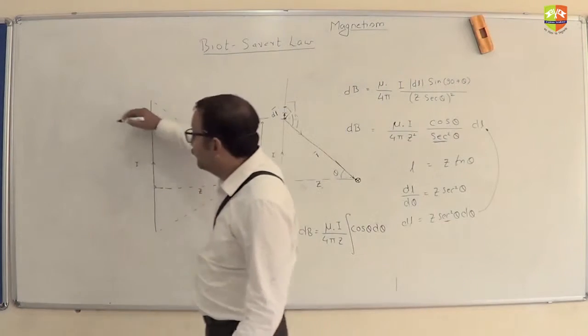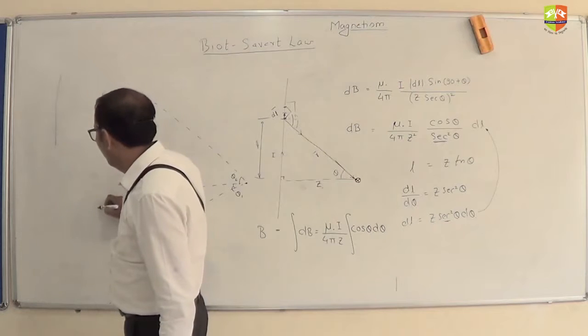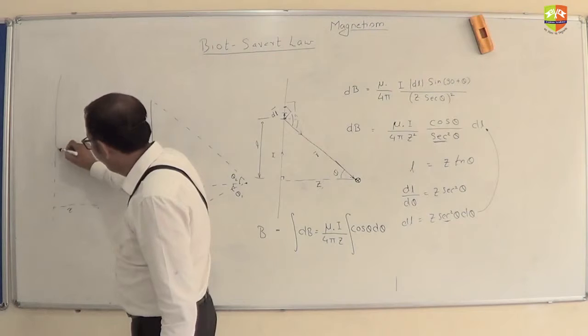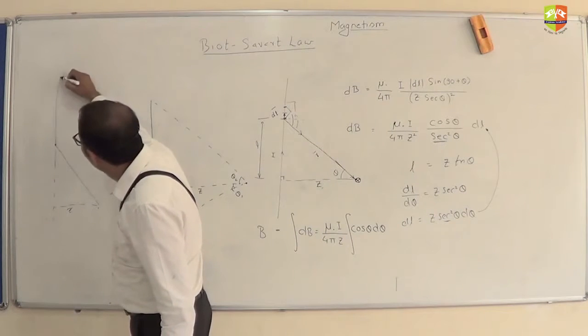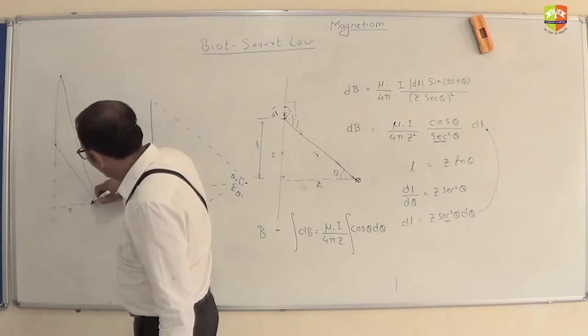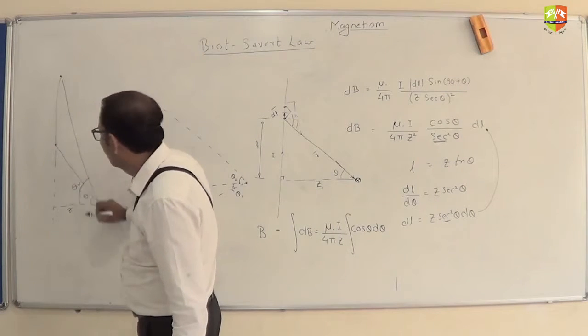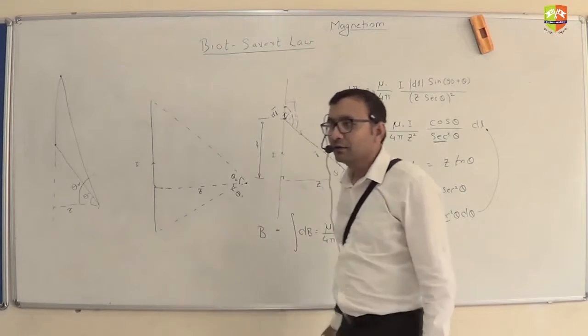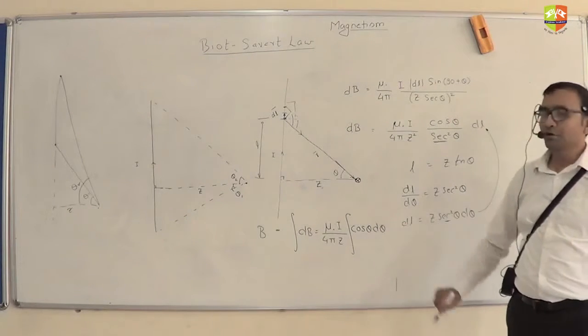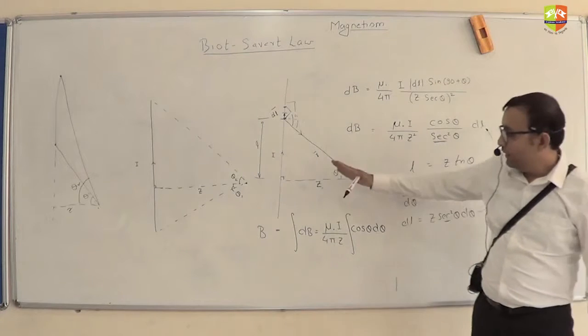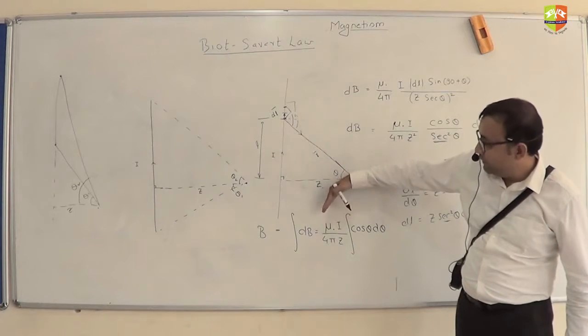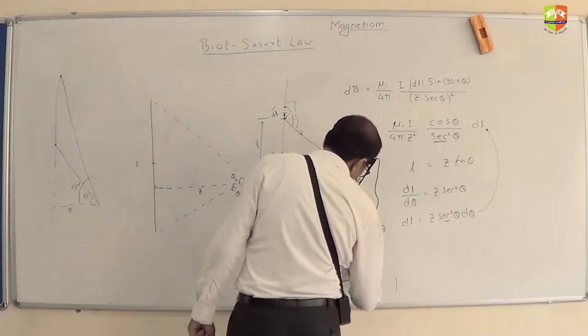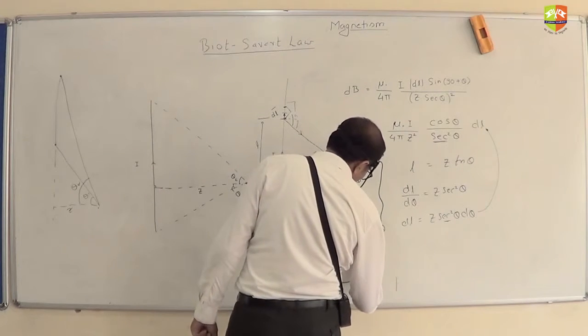Then how it is different from this scenario? Suppose you have like this. This is Z. The wire is from there to there. This is theta1 and that is theta2. How is this scenario different from that? Both will give the same answer. It should be minus theta1 to plus theta2. The orientation of my thing is changing. Minus theta1 to plus theta2.